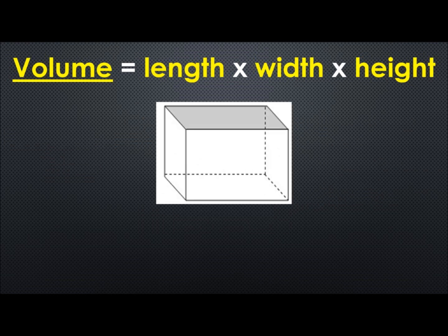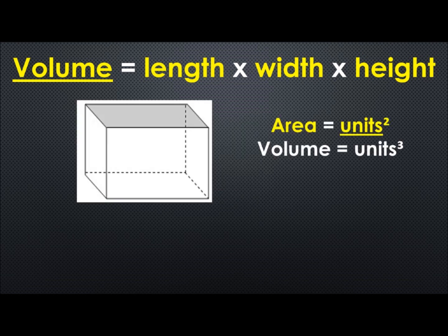So again our volume formula is length times width times height and the area formula uses units squared because there are just two lengths and the volume has three lengths so it's going to be units cubed or units to the third power.